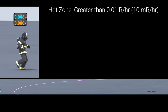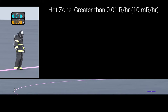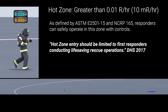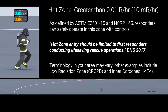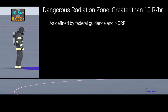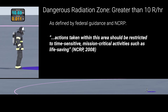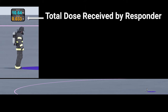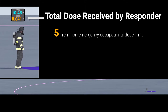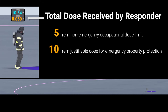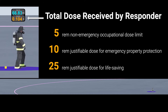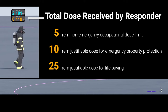This guidance uses the following hazard zone definitions. The hot zone is any exposure rate greater than 0.01 R per hour, or 10 milli-R per hour. This zone can be safely operated in by responders for life-saving and property protection activities, provided that unnecessary time spent in this zone is minimized. The dangerous radiation zone is defined as any area greater than 10 R per hour; activities in this zone should be restricted to time-sensitive, mission-critical activities such as immediate life-saving, and should be performed as rapidly as possible. In the United States, occupational workers typically have an annual dose guidance of 5 rem per year. There are no dose limits for emergency response activities. A 10 rem dose is justified for property protection, and a 25 rem dose is justified for life-saving activities. Higher doses can be justified for the protection of large populations when the responder is fully aware of the risks involved.